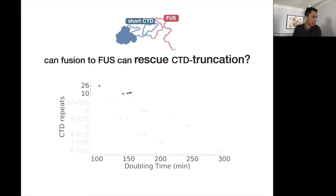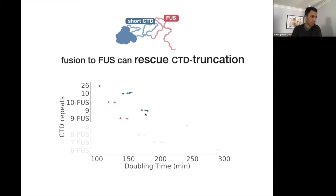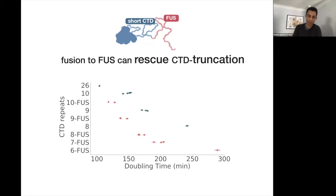Here's the growth rate experiment: the wild type doubles every ~100 minutes; with only 10 CTD repeats, this decreases to ~150 minutes. When you fuse FOS, you get a slight rescue of growth rate. At nine repeats, the rescue becomes more evident. At eight repeats, the rescue is even stronger. Most compellingly, you can get viable strains with seven and six CTD repeats when FOS is fused, whereas normally the minimum required for viability in yeast is eight CTD repeats.